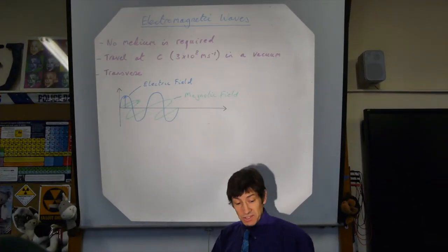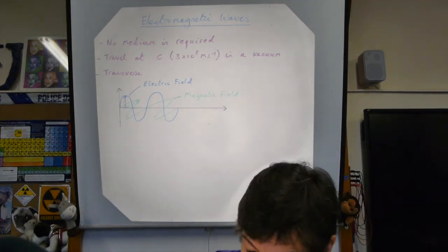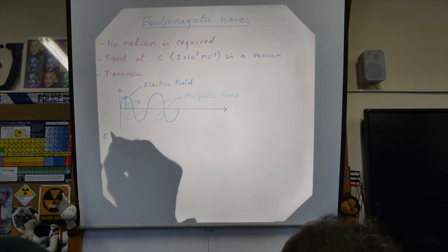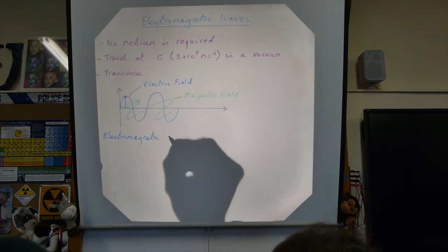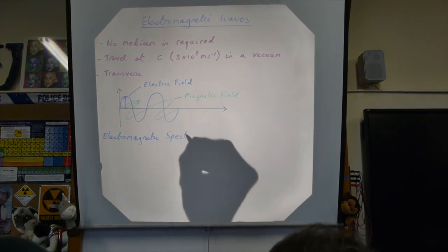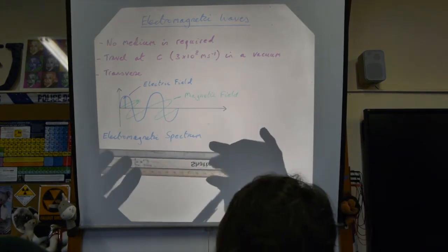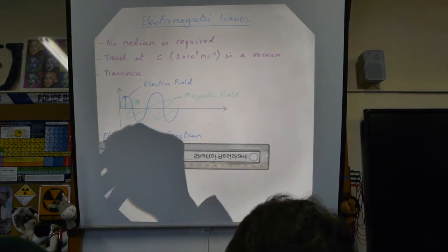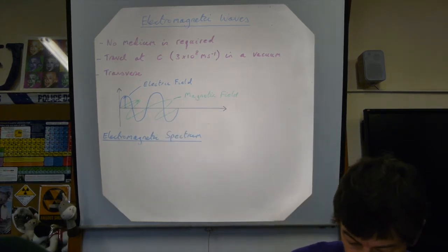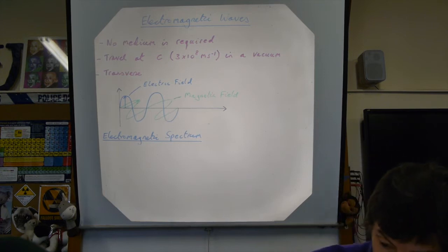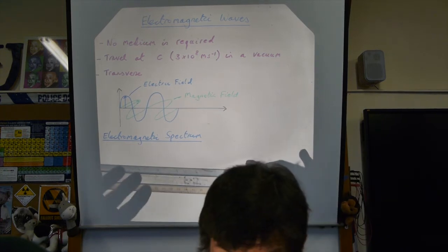You might remember from GCSE that electromagnetic waves can be categorised into a group we call the electromagnetic spectrum — all the electromagnetic waves that you know about, put in order. At A-level, you need to know the order inside out and have a really good understanding of why they're in that order.